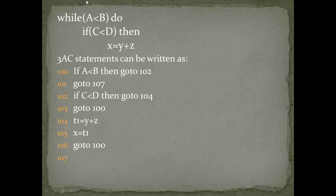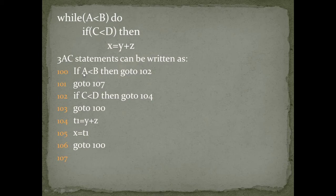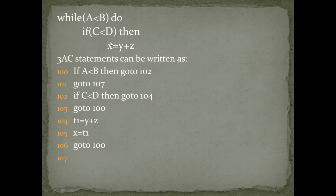For these programming instructions, we write 3AC statements, with memory addresses starting from 0. We write the condition while a less than b in terms of an if statement, because in 3AC there is no statement for any type of loop — we need to convert the loop into if statements. So at address 100, we write: if a less than b, then go to address 102.